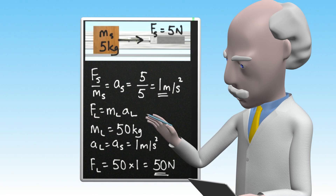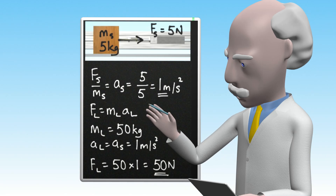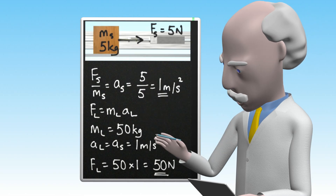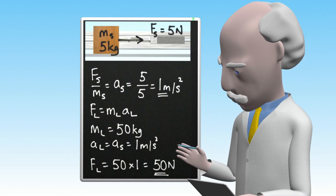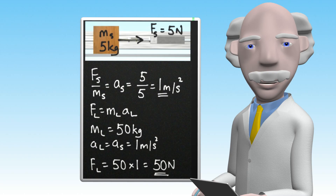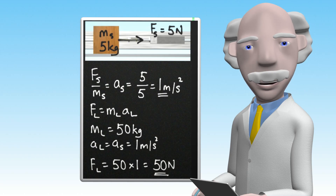This is interesting since Newton's second law has told us that for a block with a mass 10 times larger, we need to apply a force 10 times larger to get the same acceleration. In other words, to achieve a given level of acceleration, more force is required to accelerate an object which has more mass.